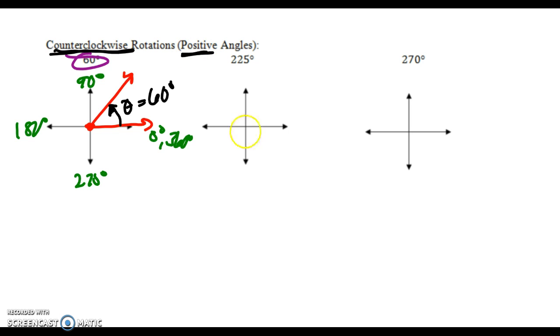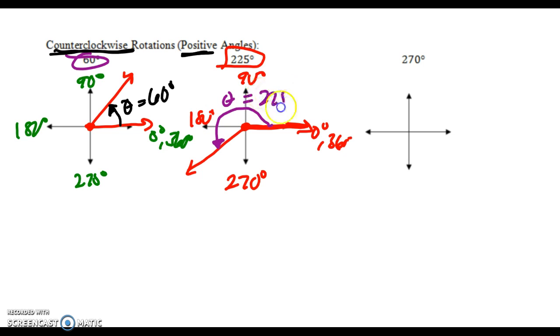If I were to do 225 degrees, I would draw my vertex and my initial side. 225 degrees looks like it would be in the third quadrant between 180 and 270. I would land in the third quadrant. To symbolize the rotation, I would start at my positive x-axis, rotate around, and show the arrow for the rotation counterclockwise. This would be theta at 225 degrees.